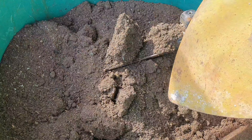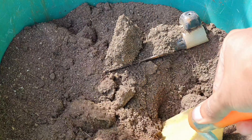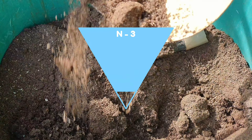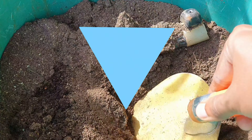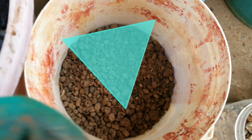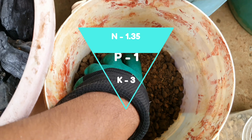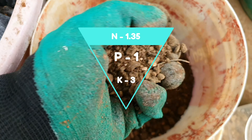Cow dung mostly has 3% nitrogen, 2% phosphorus and 1% potassium. Goat manure mostly has 1.35% nitrogen, 1% phosphorus and 3% potassium.